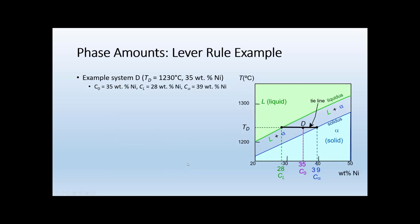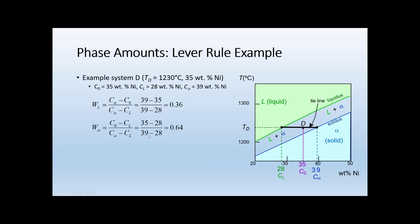Let's do a quick example using the phase compositions we computed previously. We had a tie line at temperature D with 35 weight percent nickel for the system, the alpha phase at 39 weight percent nickel, and the liquid phase at 28 weight percent nickel. Applying the lever rule, the weight fraction of liquid equals 0.36 or 36%. That makes sense — the system composition sits closer to the alpha side of the tie line, so we expect more alpha and less liquid. Applying the rule to alpha gives a weight fraction of 64%, which also looks reasonable.